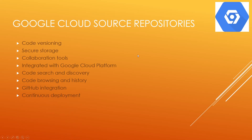The next one is Continuous Deployment. Cloud Source Repositories can trigger build and deployment processes automatically through integration with Google Cloud Build, helping you automate the deployment of your application based on code changes. Overall, GCP Source Repositories provide a secure, scalable, and collaborative environment for managing your source code in the cloud, offering the tools you need to streamline your development process. In the demo, we are going to see how to create one and how to browse it.